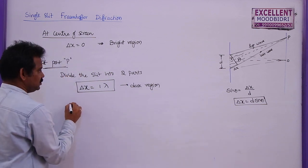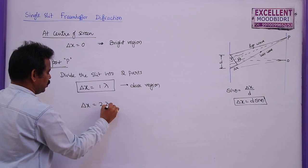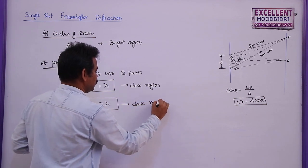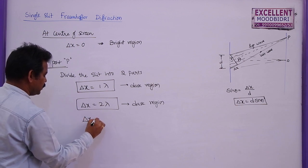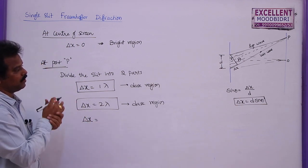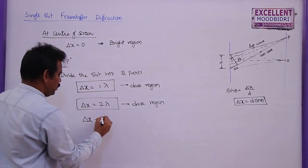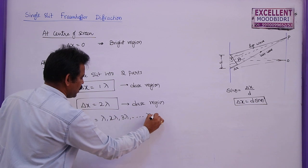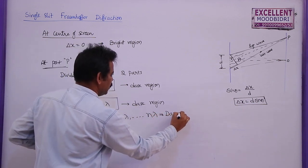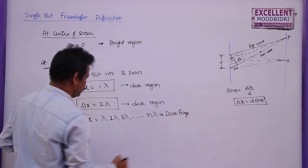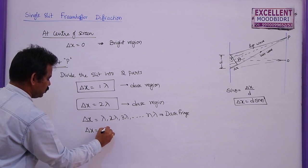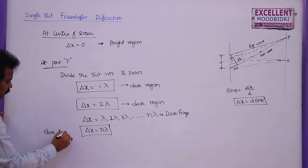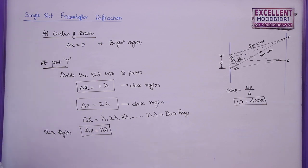Similarly, if the path difference delta x = 2λ, you also get a dark region. Finally, we can write: if the path difference between the first and last wave reaching point P equals λ, 2λ, 3λ, and so on up to nλ, you get a dark fringe. So delta x = nλ is the condition for a dark region in diffraction, whereas the same condition gives a bright region in interference.